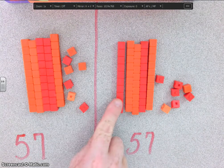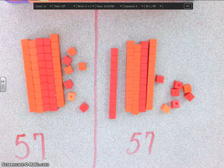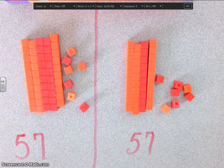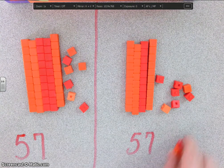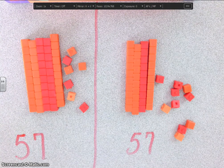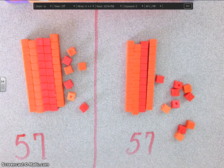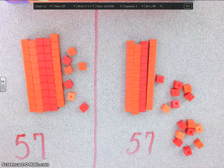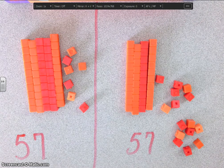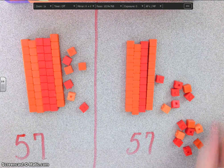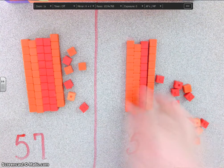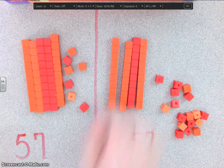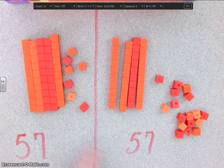You could trade one in. Trade a what in? One ten. So I'm going to take a ten out, and what do I do now? Now you get ten ones. I'm going to put ten more ones in, one, two, three, four, five, six, seven, eight, nine, and ten. So now, instead, I have four tens, and I have seventeen ones. And that is showing fifty-seven two different ways.